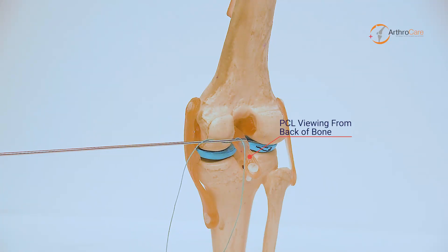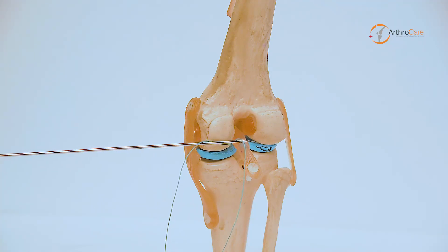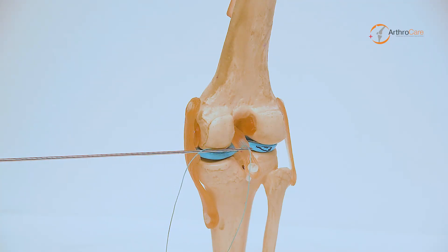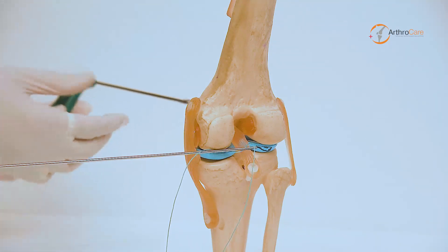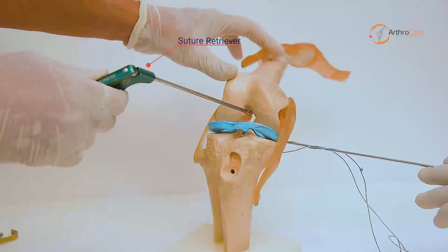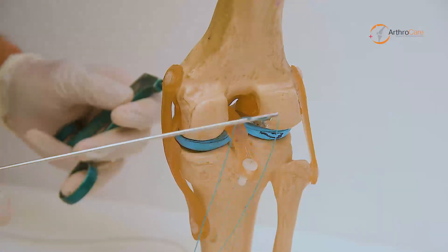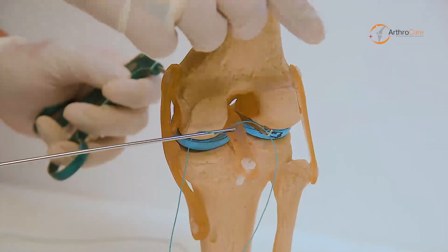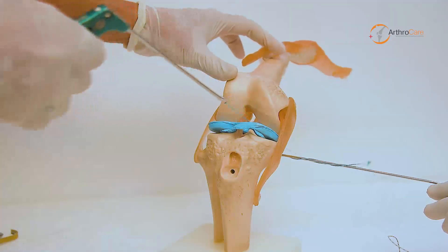I am introducing the wire loop in the K-wire, and this wire loop is being pulled out with a suture retriever from above the PCL. This is the suture retriever. I am passing it above the PCL and retrieving the wire loop.